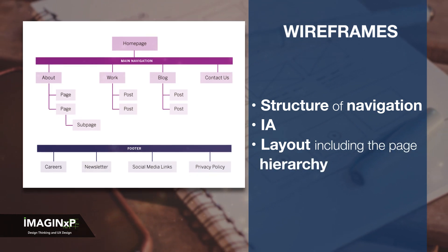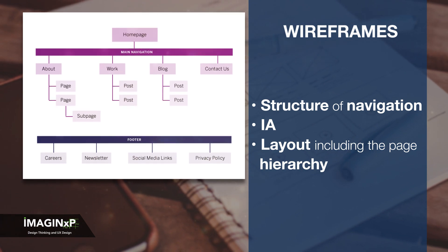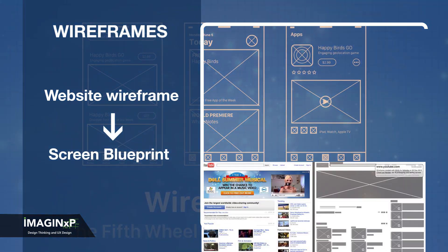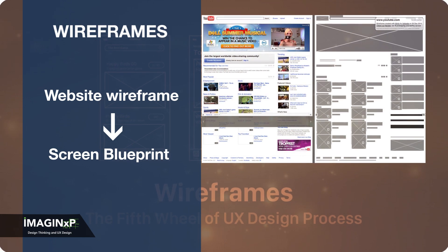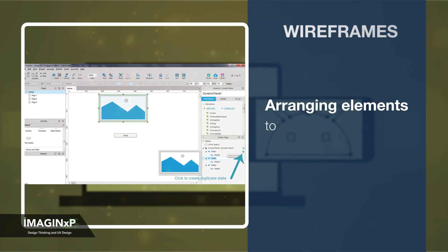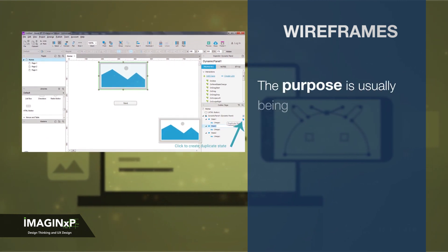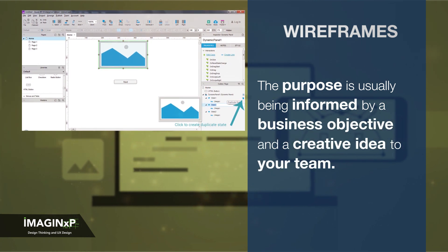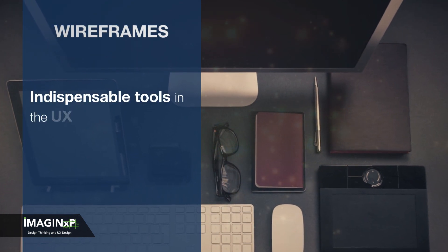Wireframes also help the visual designer to place content properly into their visual design. A website wireframe, also known as a screen blueprint, is a visual guide that represents the skeletal framework of a website. Wireframes are created for arranging elements to best accomplish a purpose, usually informed by a business objective and a creative idea for your team. These are indispensable tools in the UX designer's toolkit.